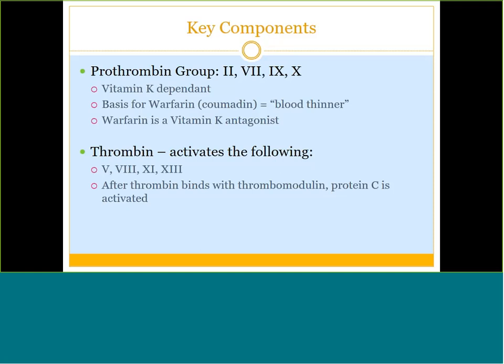Thrombin is technically factor 2a — the activated form of factor 2 (prothrombin). Thrombin has a huge role: it activates factors 5 and 8, which is why they are already activated when they appear in the pathway. Thrombin also activates factor 11, factor 13, and protein C after thrombin binds with a substance called thrombomodulin. So factors 5, 8, 11, and 13 are all activated by thrombin — a very important role to keep in mind.